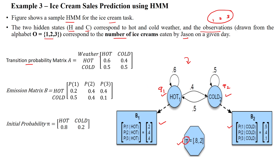We can make the transition matrix. For hot to hot: 0.6. For hot to cold: 0.4. From cold to hot: 0.5. And cold to cold: 0.5.